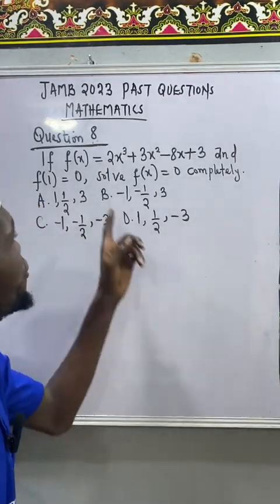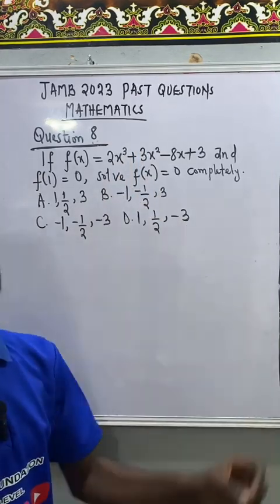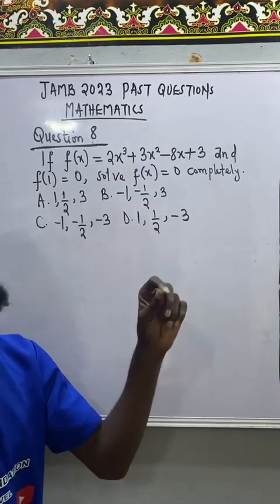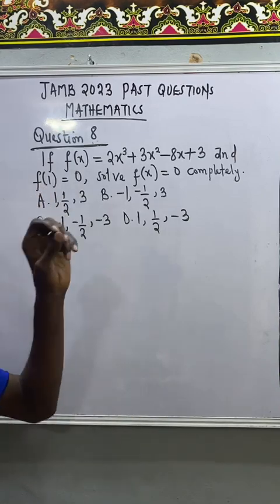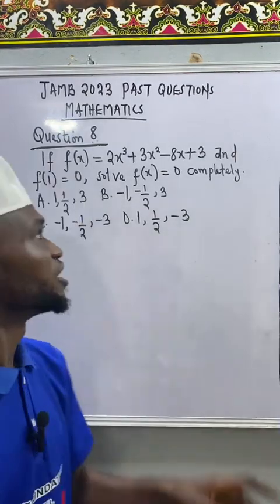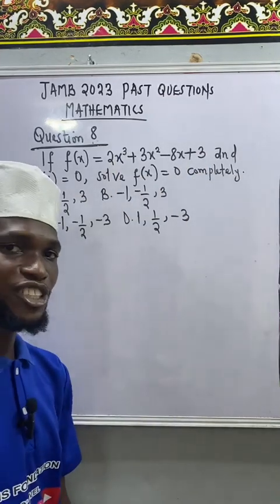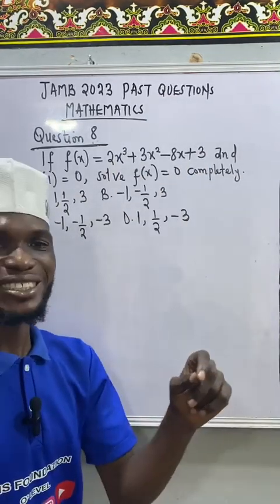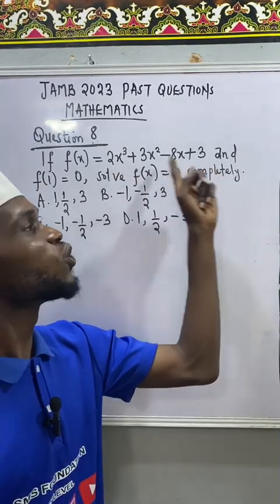Now, this question is a polynomial and this is cubic polynomial, that is cubic expression. Now, they have given us that f of 1 equal to 0. What does that mean? Anytime we substitute 1 for x in this expression, our result will be 0. That simply means that 1 is a 0 of this polynomial.